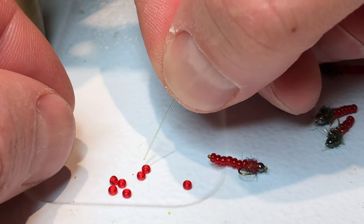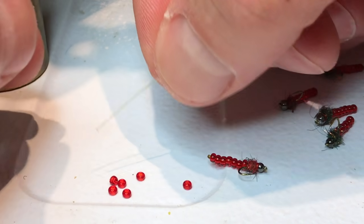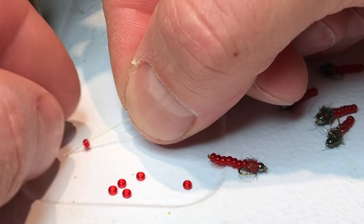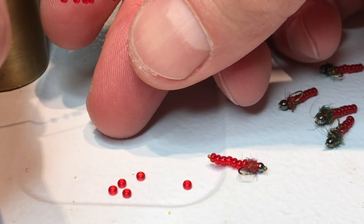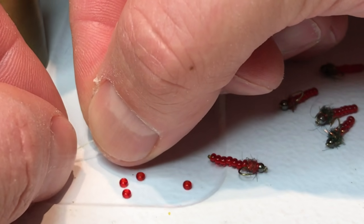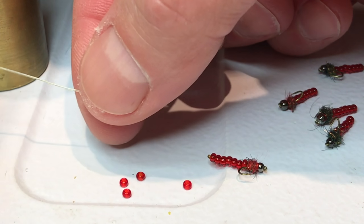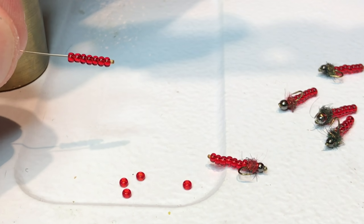Poking the monofilament into the beads as they laid on my tying vise seemed to be the easiest way. I suppose you could also put them in your hand and install them that way. Seven appears to be a good number for a size 18.